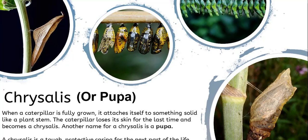After they have their caterpillar stage, where they eat as many leaves as they can — think of the very hungry caterpillar — the caterpillar, when it's fully grown, attaches itself to something solid, like a plant stem or a sturdy leaf. The caterpillar loses its skin for the last time and becomes a chrysalis, which is another name for the pupa stage. A chrysalis is the tough protective casing for the next part of the cycle.